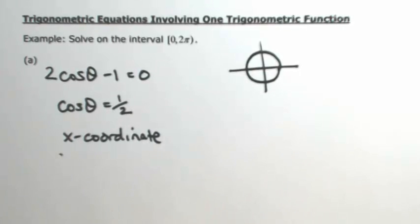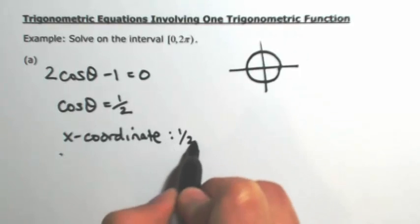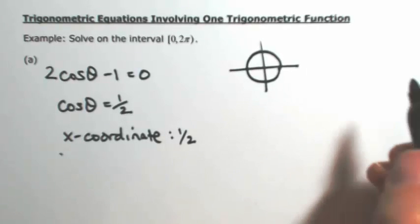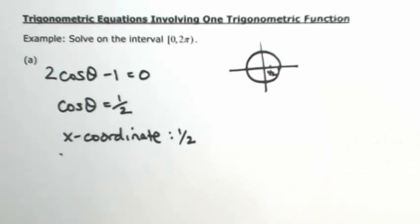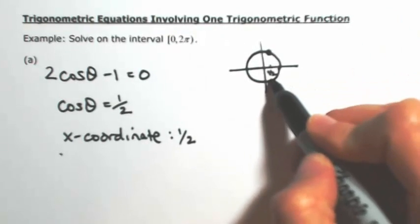So we're looking for the angle or angles whose x coordinate is 1/2. I'm going to mark out where x is 1/2. That actually happens in two places.